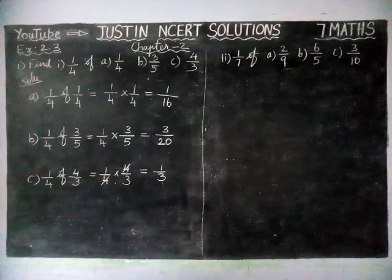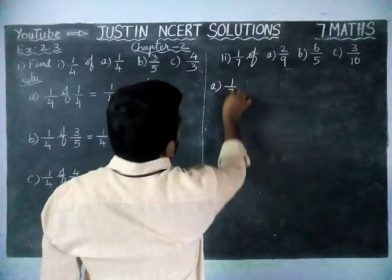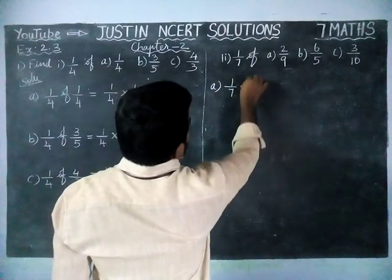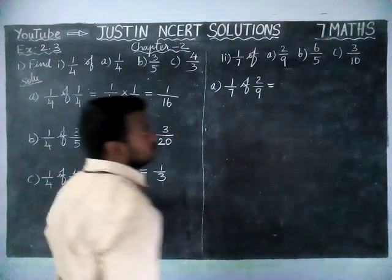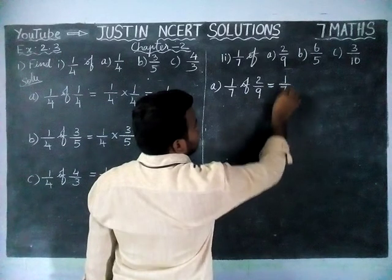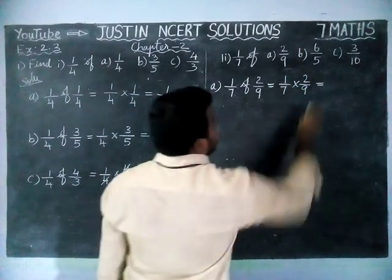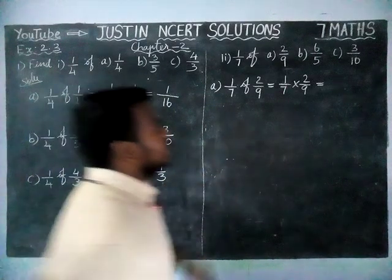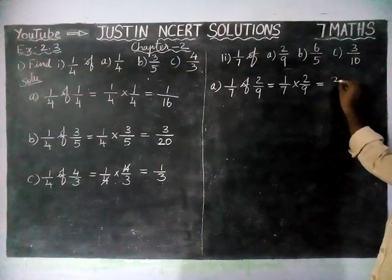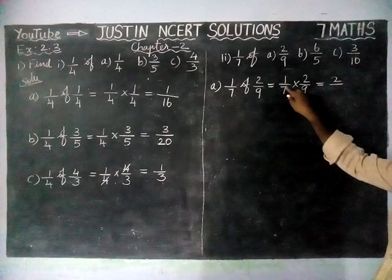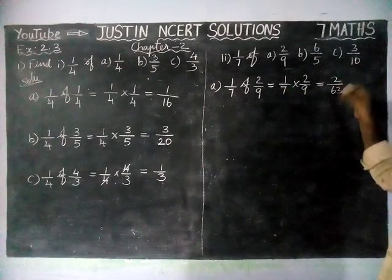Now, we are going to check Roman numeral 2. Option A: 1/7 of 2/9 is equal to 1/7 into 2/9. Here, we don't have any other choices, so just we are multiplying: 1 into 2 is equal to 2, divide by 9 times 7 is 63. And we cannot simplify hereafter.